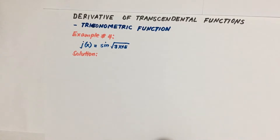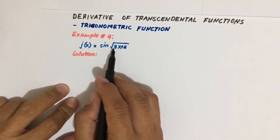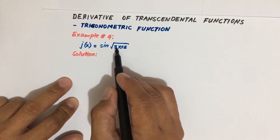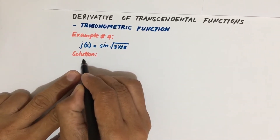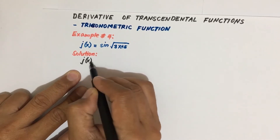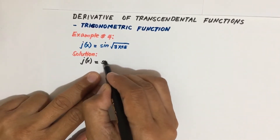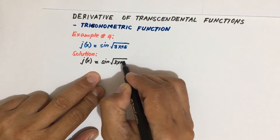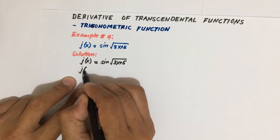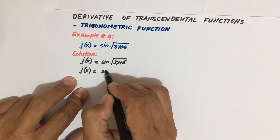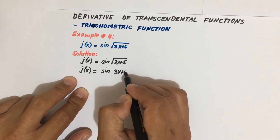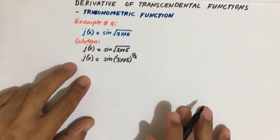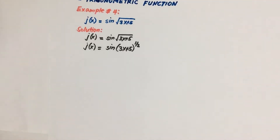To solve this problem, first we have to transform this into an exponential power for the radicand. So rewriting this, we have g(x) equal to sine of the square root of 3x plus 5, which we can rewrite as sine of 3x plus 5 raised to a power of one-half.